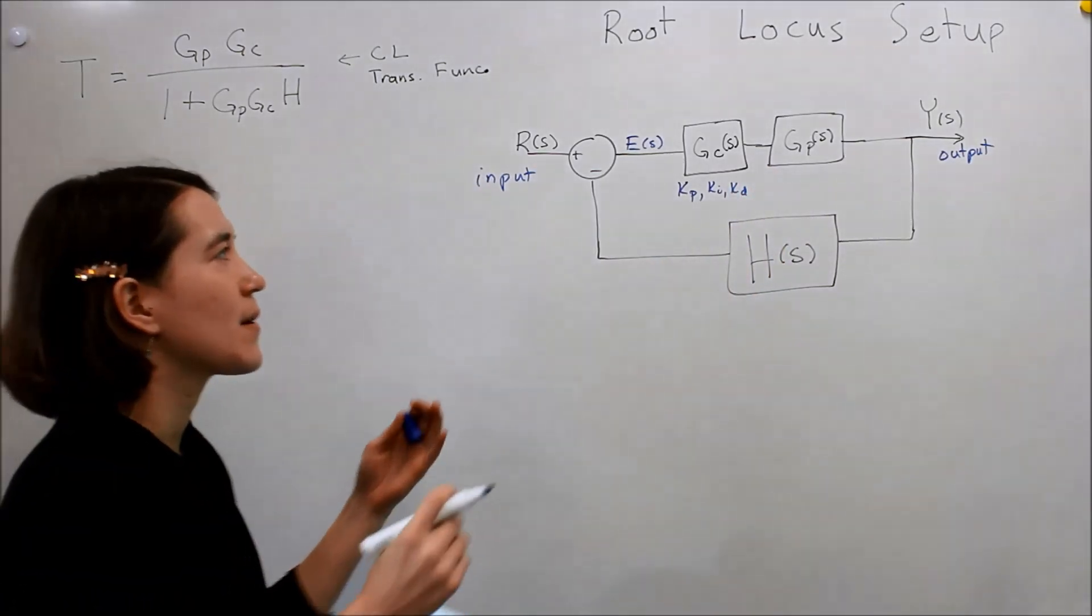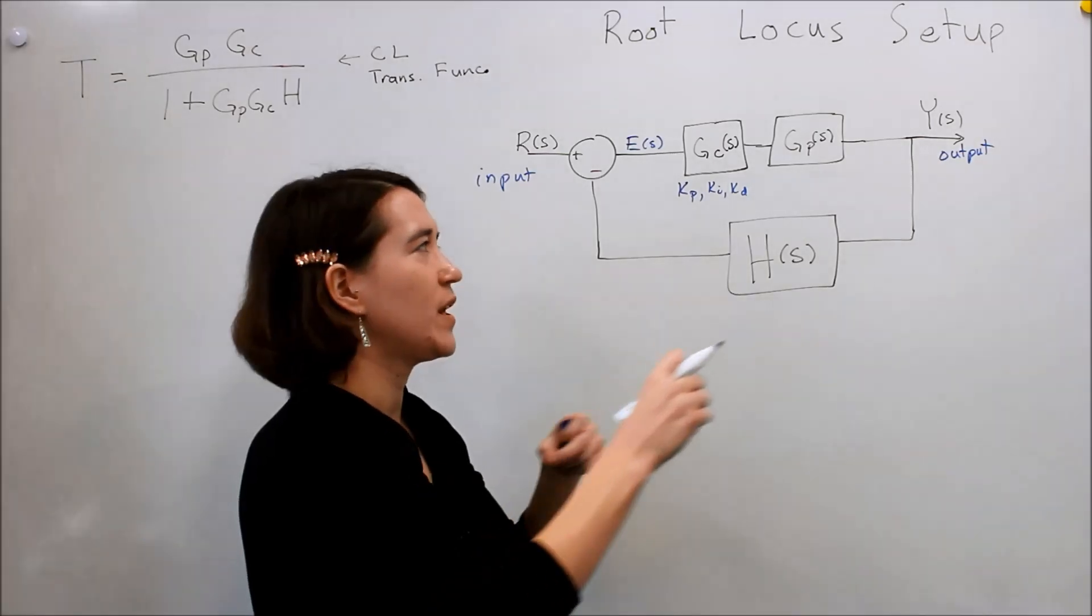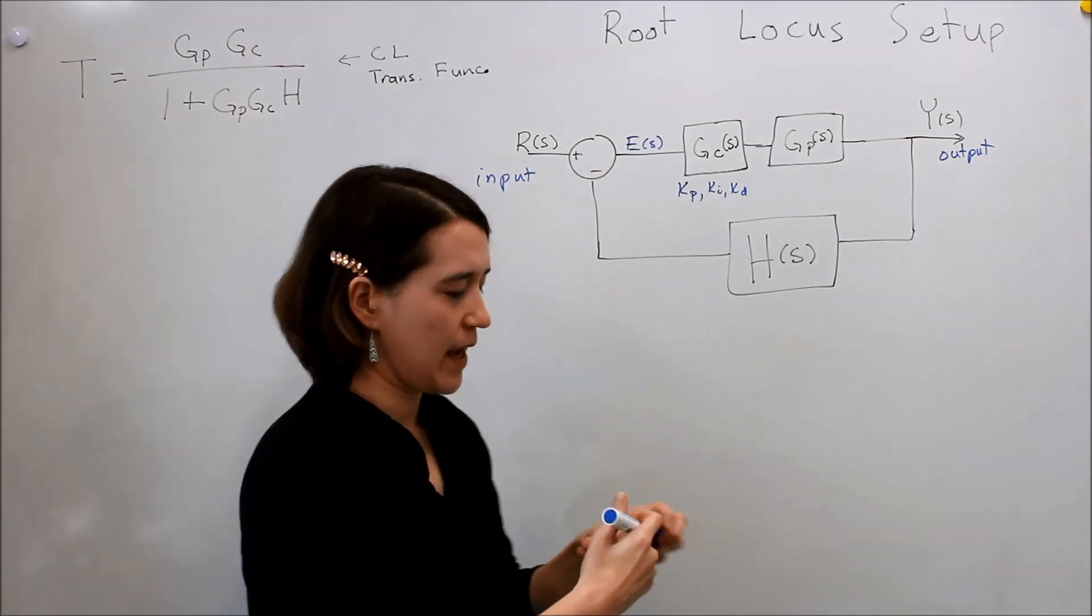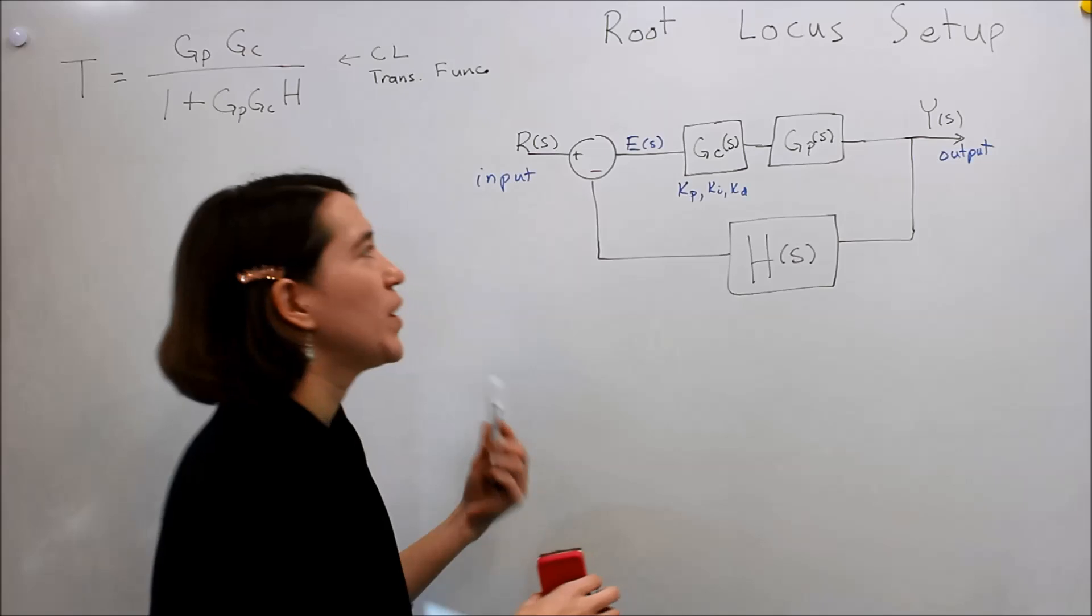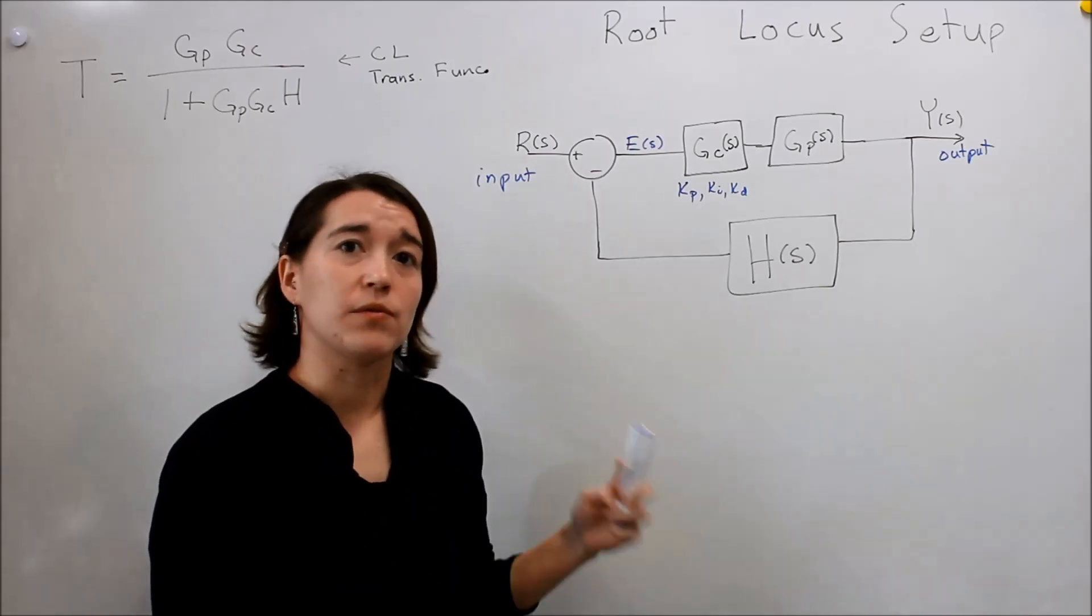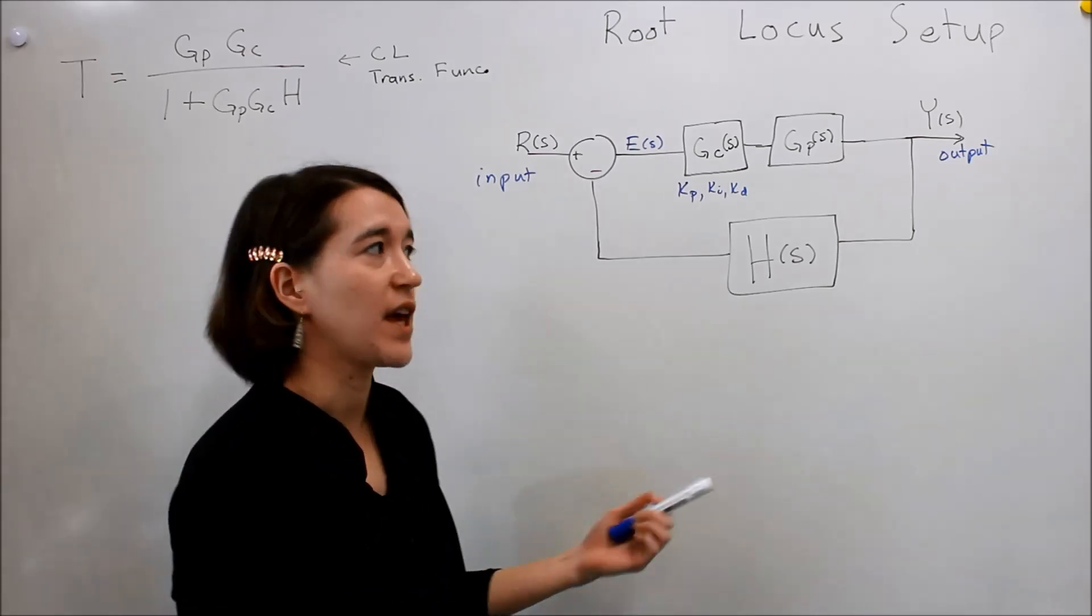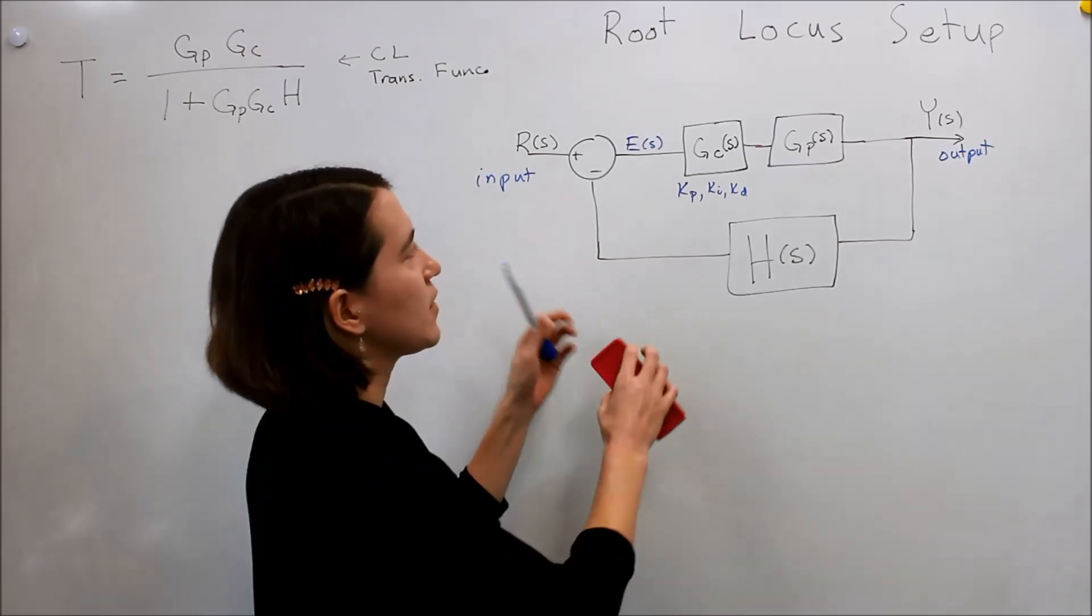But we tend to have some value K that we are changing. And we need to know how we pick that value. So we need to know what value of K will make our system stable.